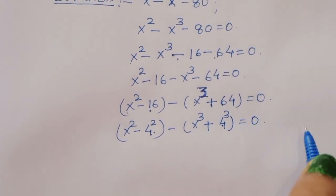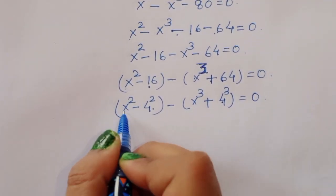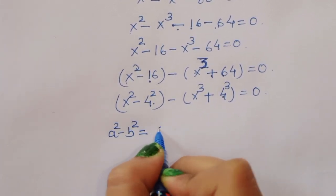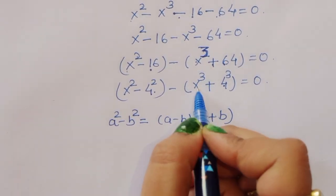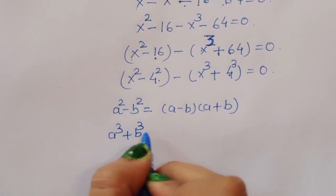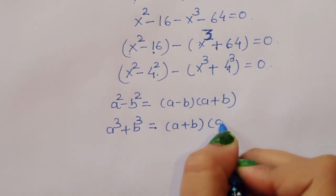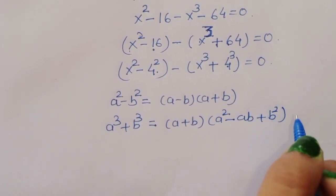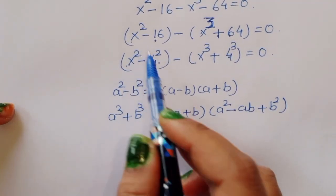Now we have two formulas to apply. The first one is: a squared minus b squared equals (a minus b)(a plus b). The second one is: a cubed plus b cubed equals (a plus b)(a squared minus ab plus b squared). We will substitute these two formulas here.